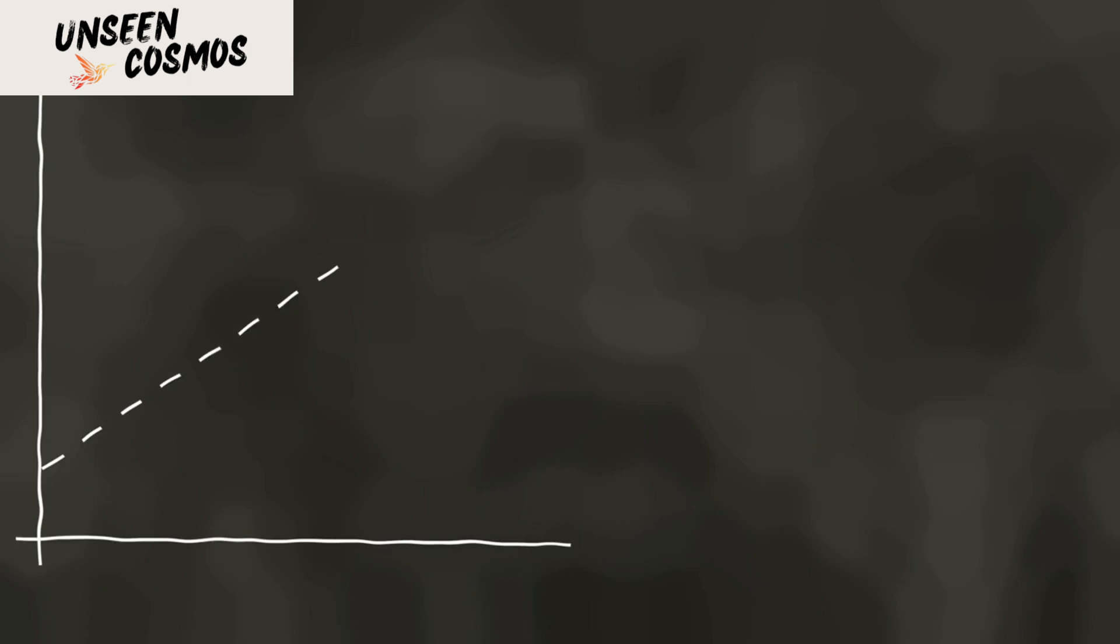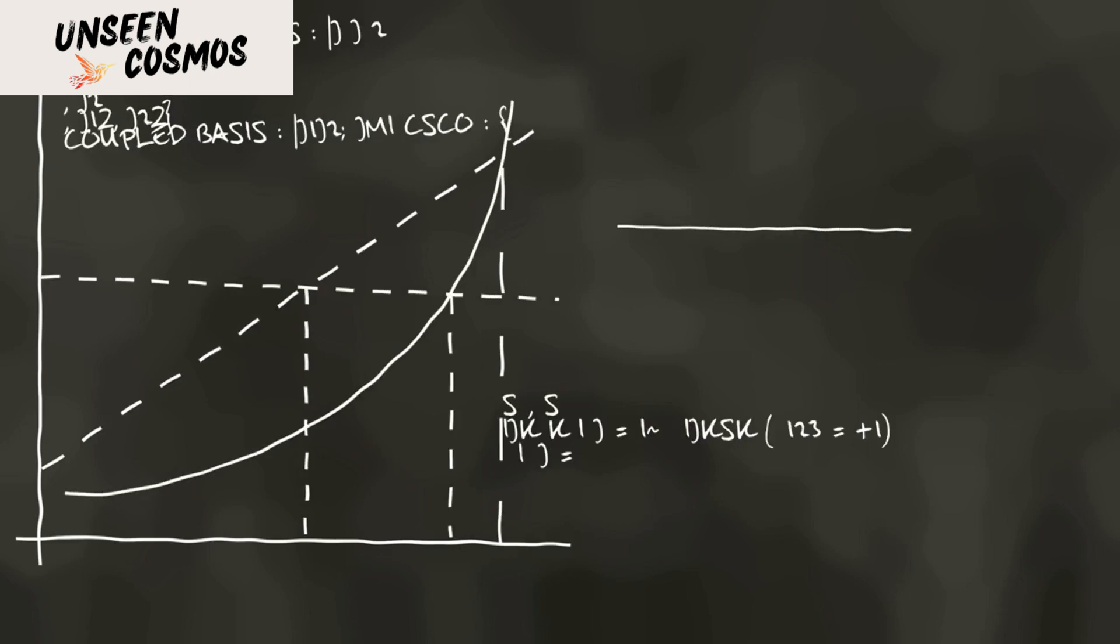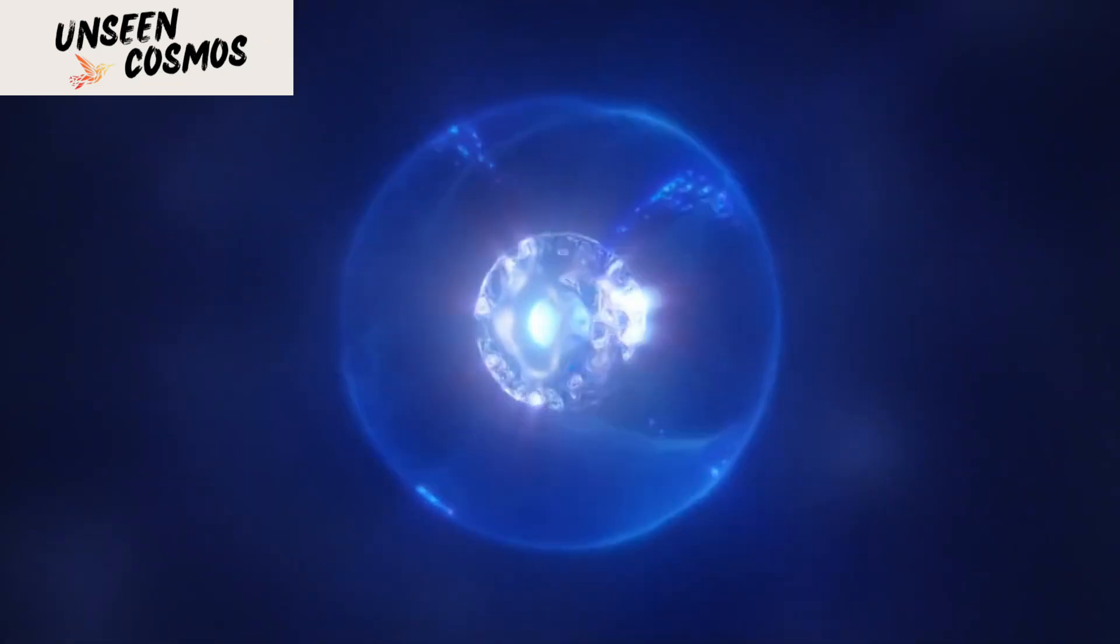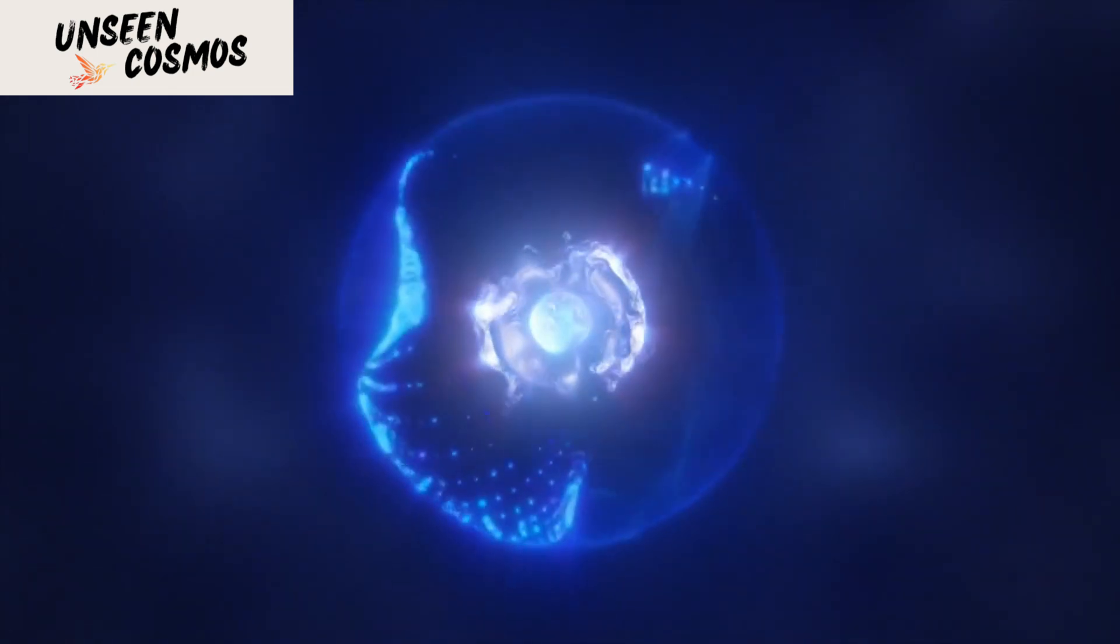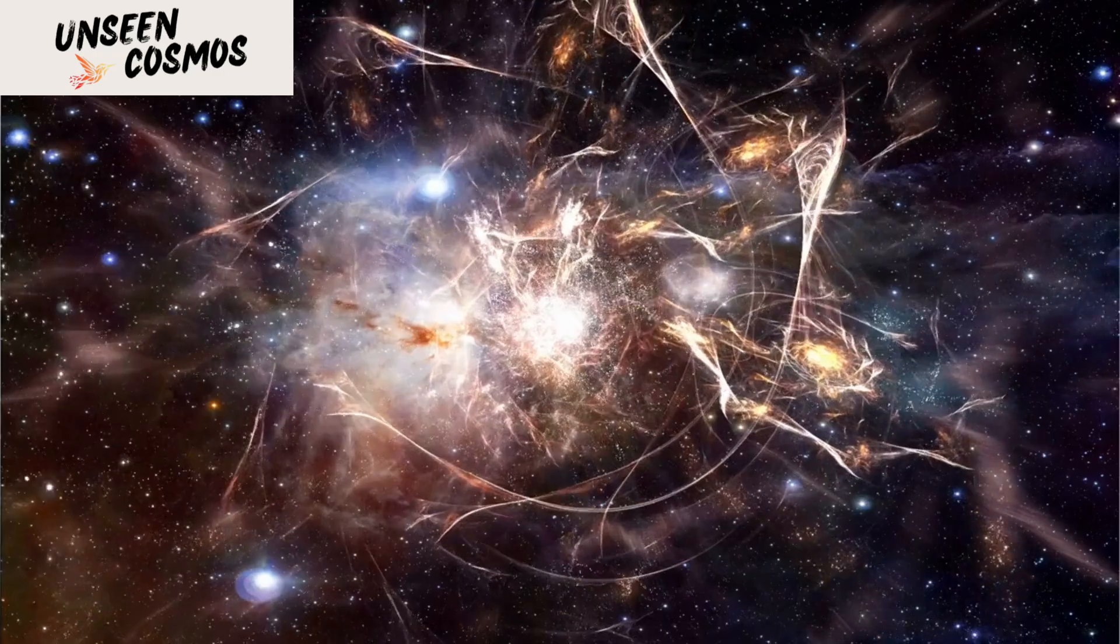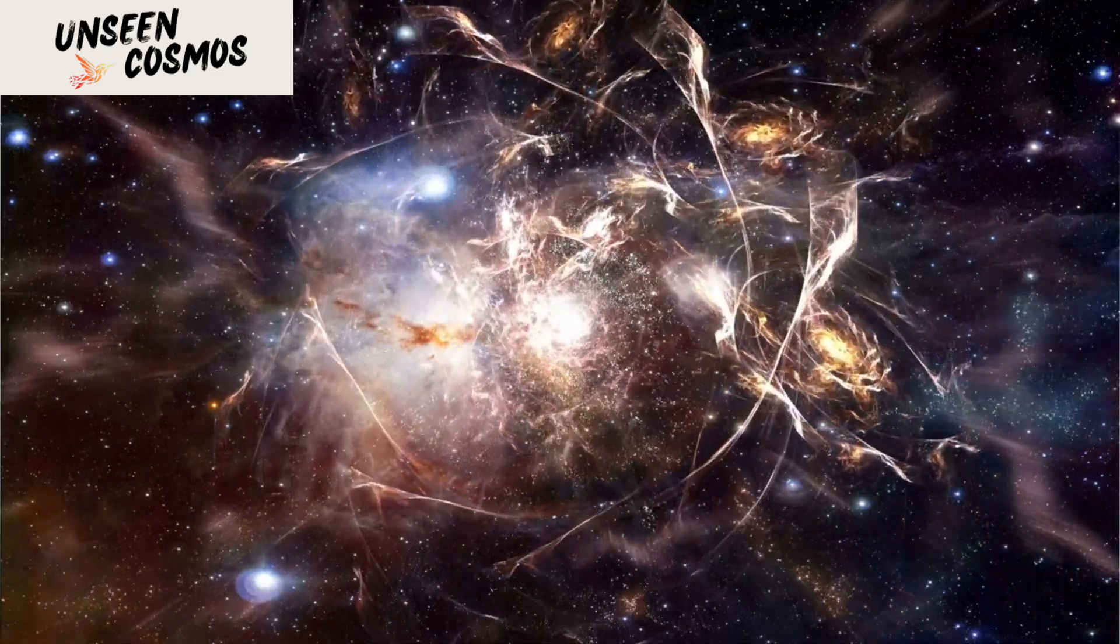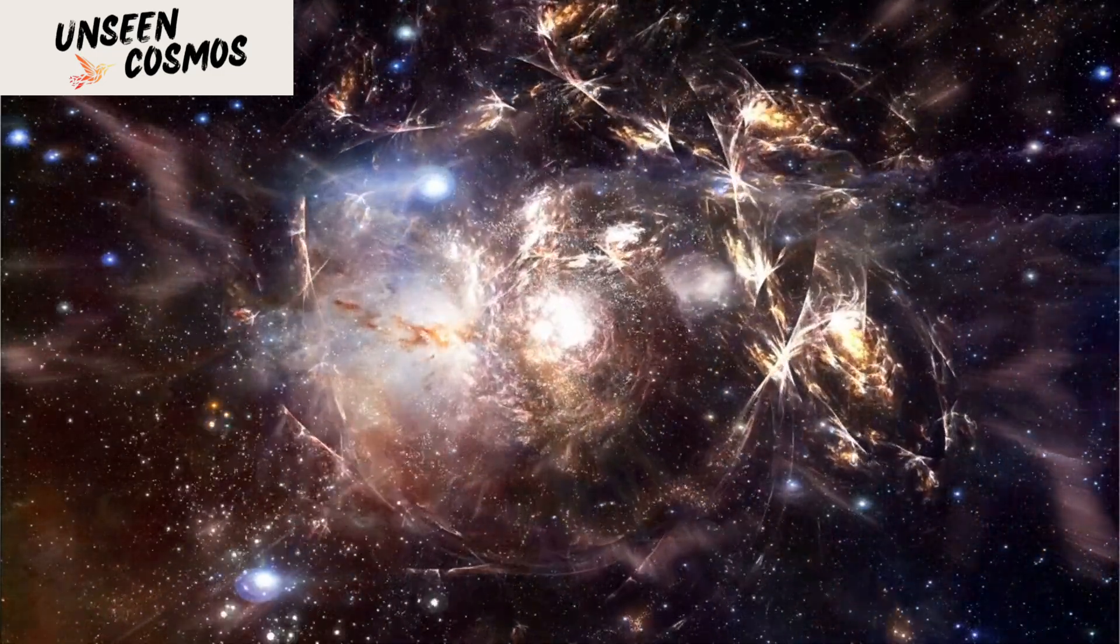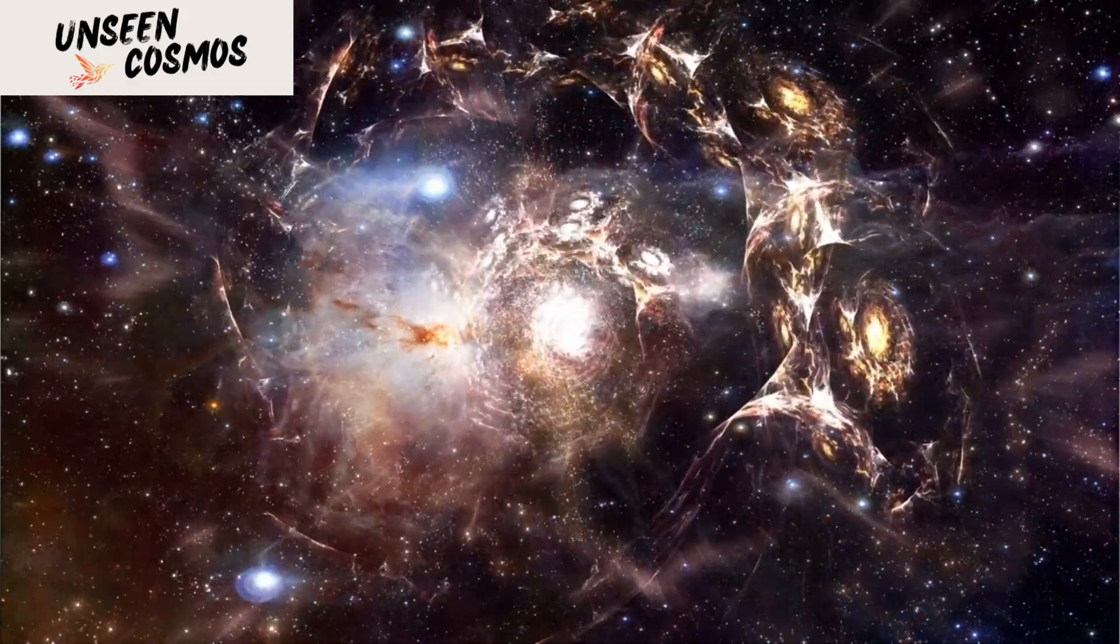4. Quantum Cosmology. Quantum cosmology seeks to apply the principles of quantum mechanics to the entire universe, including its origin. Various approaches, such as the Wheeler-DeWitt equation, attempt to describe the universe as a quantum system. These models propose that the universe could have emerged from a quantum fluctuation or exist in a superposition of different states before the Big Bang.